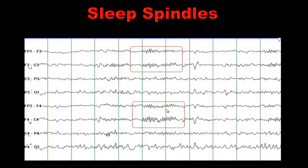Sleep spindles are normal — everything we looked at before was abnormal, but sleep spindles are normal. When you see these discharges, they are high-frequency, beta-to-alpha frequency discharges seen in the frontal-central head region, and they are diagnostic of stage 2 sleep. If you see sleep spindles, the patient is in stage 2 sleep. You also see vertex waves here — these are vertex waves and these are sleep spindles — confirming stage 2 sleep.